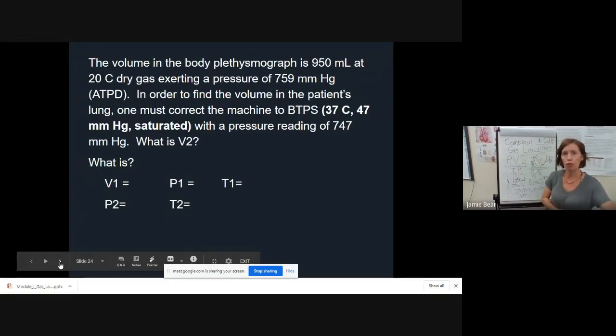We're going to do one more. The volume in the body box is 950 milliliters at 20 Celsius, dry gas exerting a pressure of 759. This condition is atmospheric temperature pressure dry, meaning you don't have to correct the pressure because it is dry. In order to find the volume in the patient's lung, one must correct the machine to BTPS with the pressure reading of 747. What's your V2?